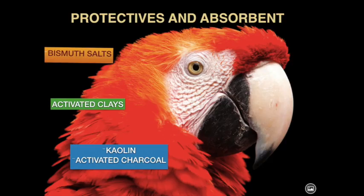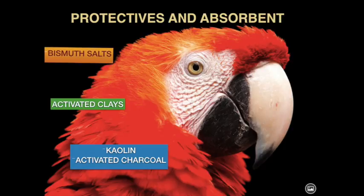Protectives are chemically inert substances used in the treatment of intestinal inflammation and intestinal ulcers. They form a protective coat over the mucus of the gastrointestinal tract, preventing the exposure of ulcers to hydrochloric acid. Adsorbents are chemically inert, finely powdered substances used to adsorb toxins, viruses, and bacteria that cause diarrhea. They act by surface phenomenon — adsorbing onto the wall of the GIT and binding to causative bacteria or toxins, which are then eliminated through stool.